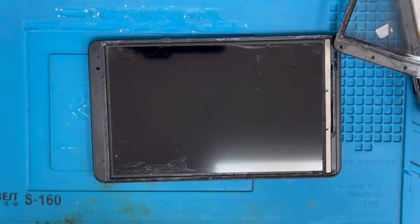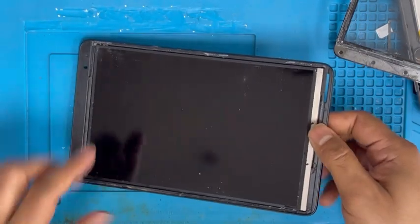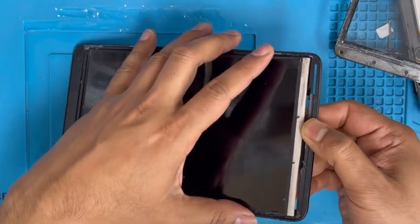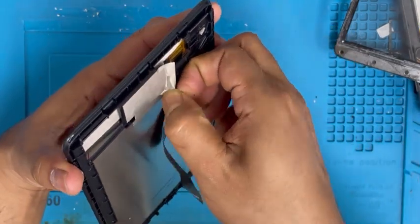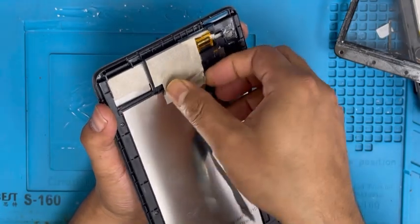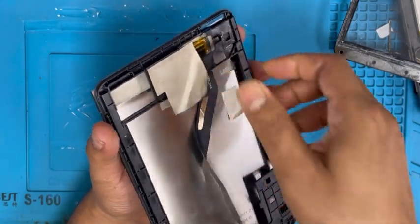Now we're gonna clean the frame. There is glue on it. First, remove the LCD from the frame. Now we just removed the LCD. Now it's easy to clean it.